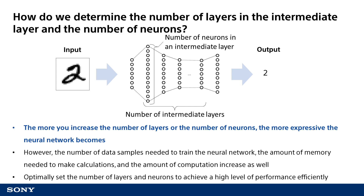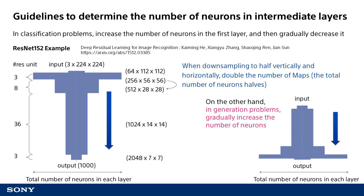Here, we have some guidelines for determining the number of intermediate layers and the number of neurons. Setting the number of layers and neurons according to this theory allows you to achieve a high level of performance efficiently without increasing the amount of memory or computation more than necessary, and without increasing the required number of data samples.